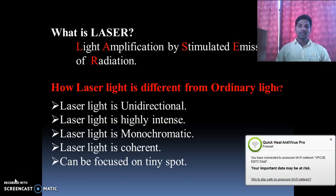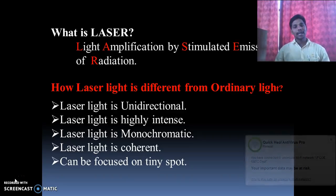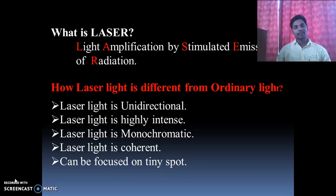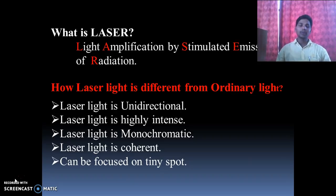Laser light is monochromatic. Monochromatic simply means the light having a single frequency, a single wavelength, or a single color. Such type of properties the laser has. But in case of ordinary light, there is polychromatic light.